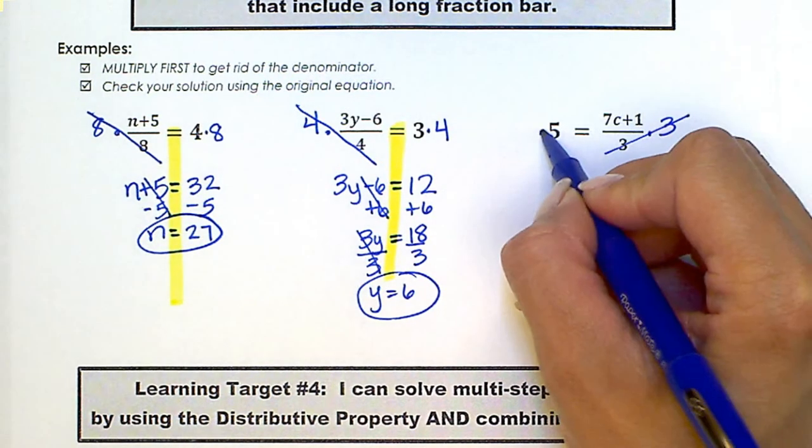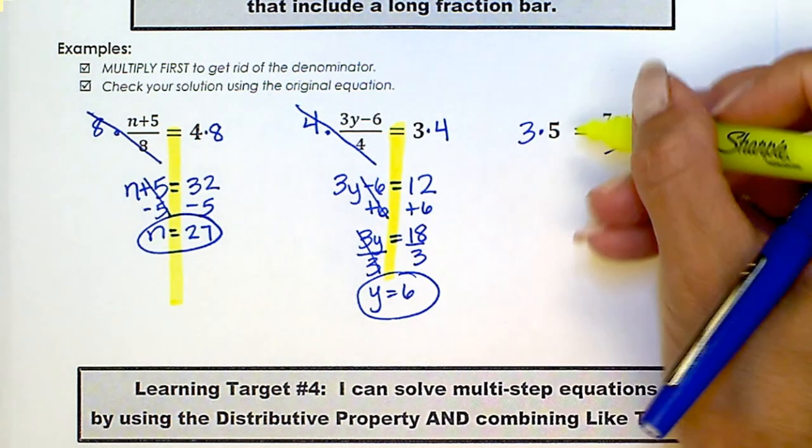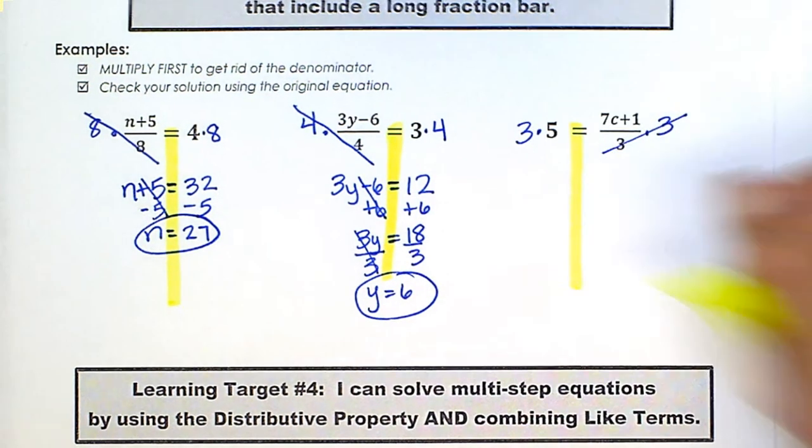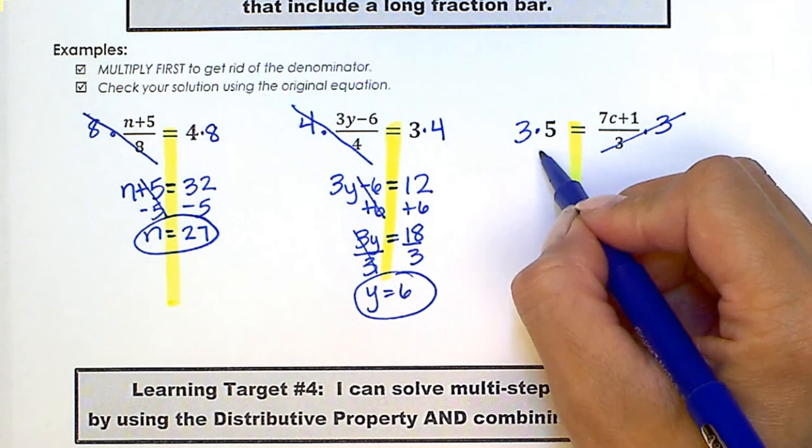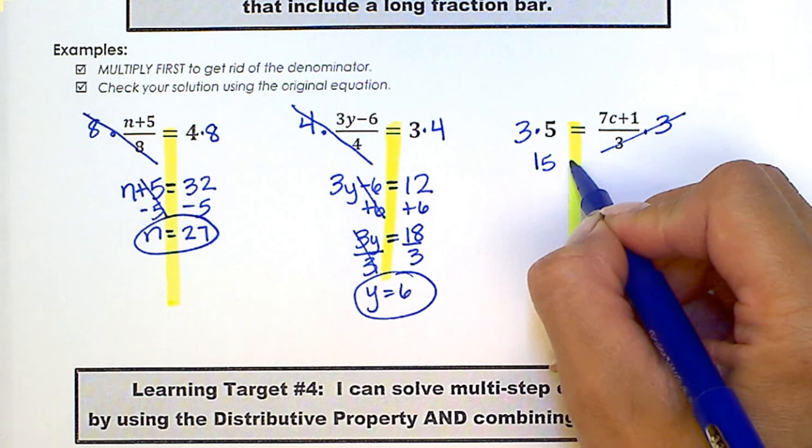Moving it over here, draw my line down the middle. That helps me keep everything lined up. 3 times 5 is 15, equals 7c plus 1.